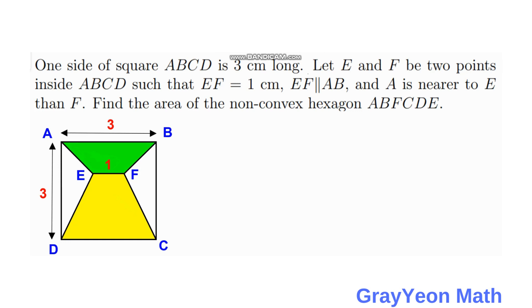First, we analyze that the area we are looking for consists of two trapezoids. Since we are talking about the area of the non-convex hexagon ABFCDE, we see that it is composed of two trapezoids.